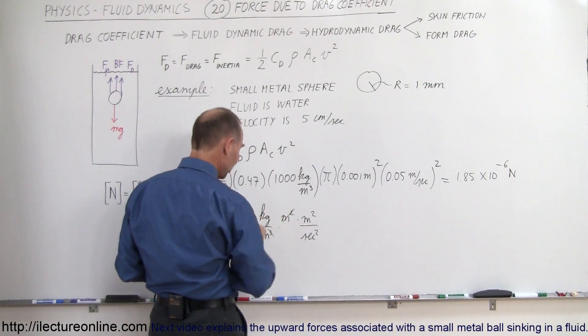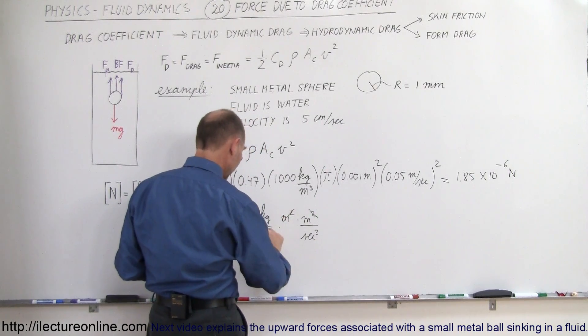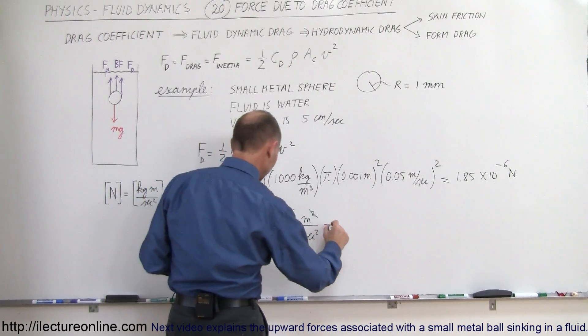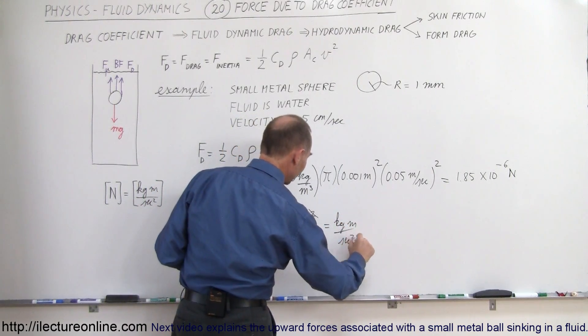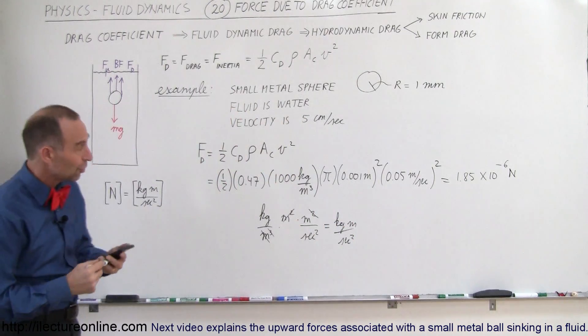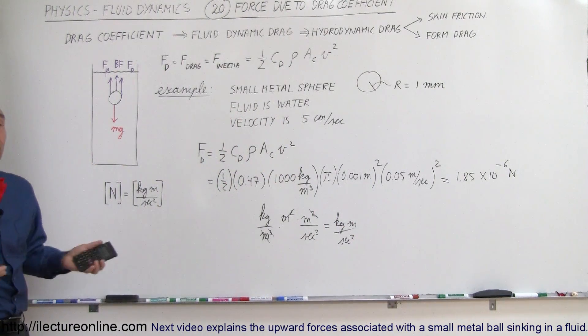So I have meters squared, gets rid of two of those, this goes down to that, and that looks like it's kilograms meters per second squared. So that's indeed units of newtons, so the units work out as well. So that's how we calculate that.